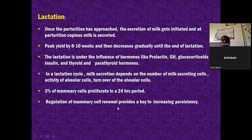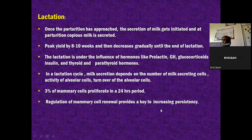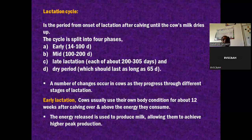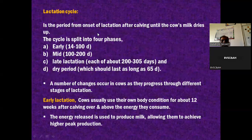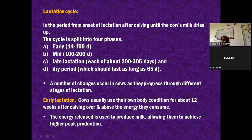Regulation of mammary cell renewal provides the key to increasing persistency - how long the animal produces milk and the rate of decrease from peak to dry off. The lactation cycle is the period from onset of lactation in the cow until the cow's milk dries up or up to the dry period. This cycle has been split into four phases - early lactation, mid lactation, late lactation, and dry period.